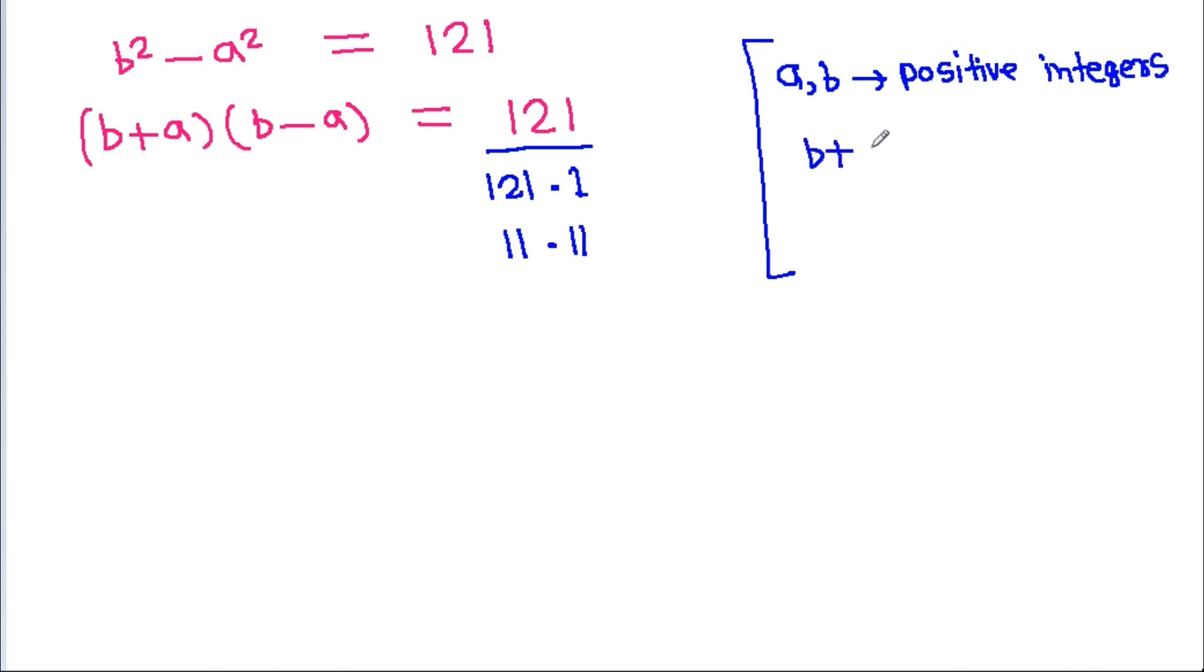That means b+a will be greater than b-a. So both b+a and b-a cannot be equal to 11. Therefore, b+a = 121 and b-a = 1.